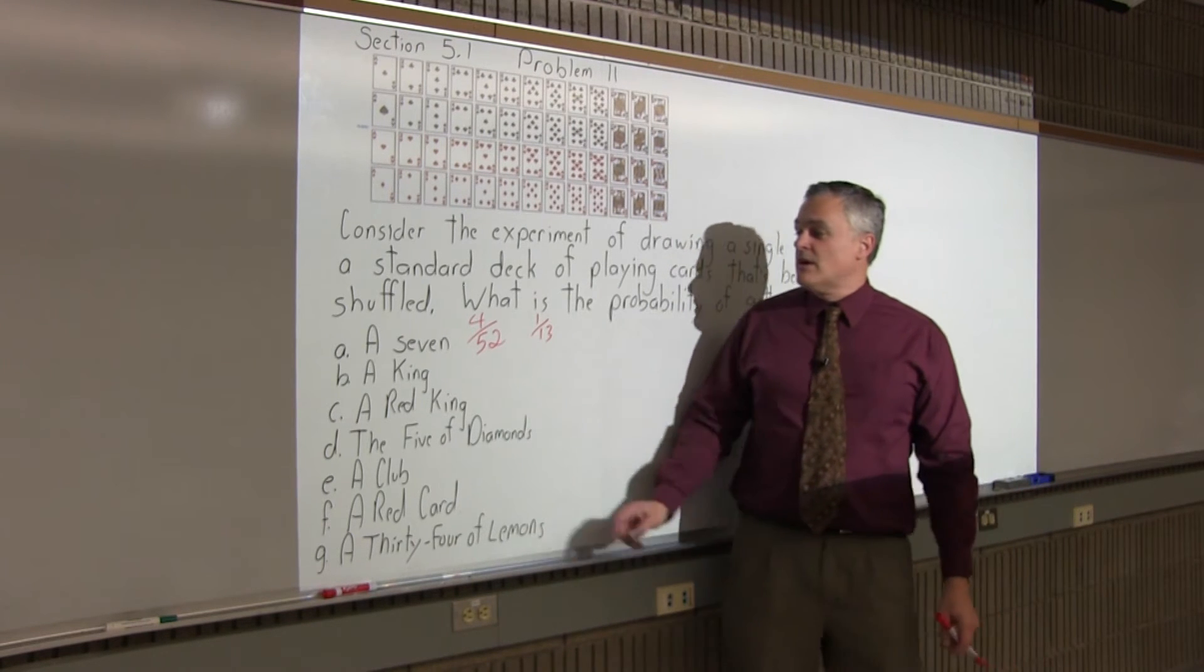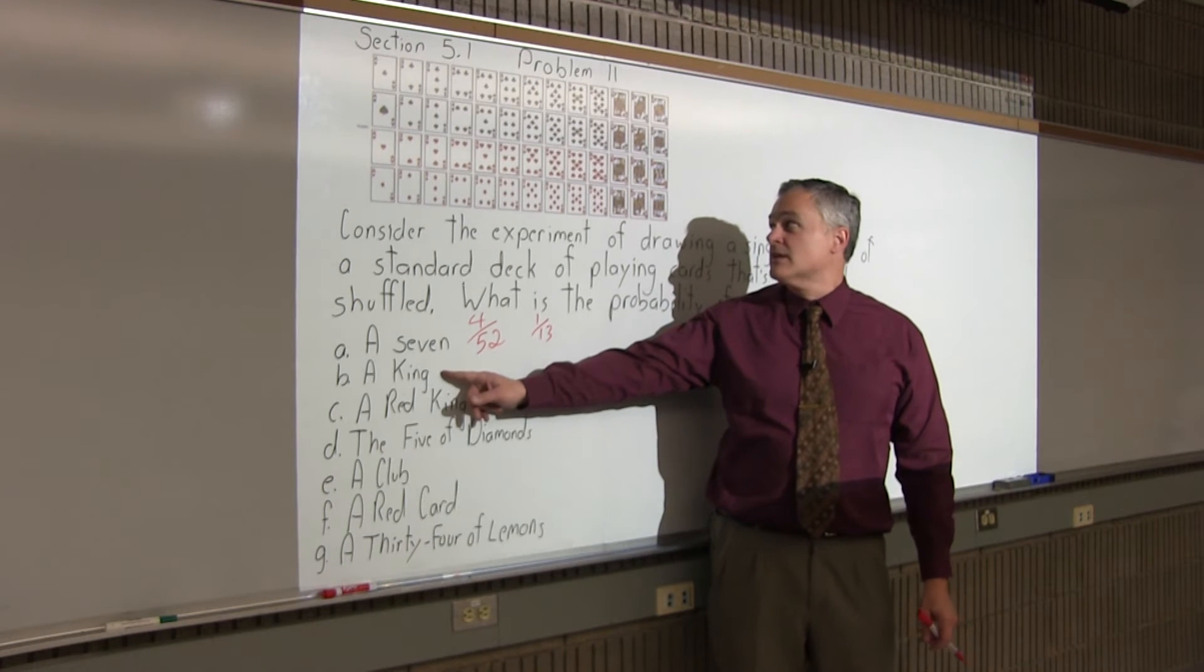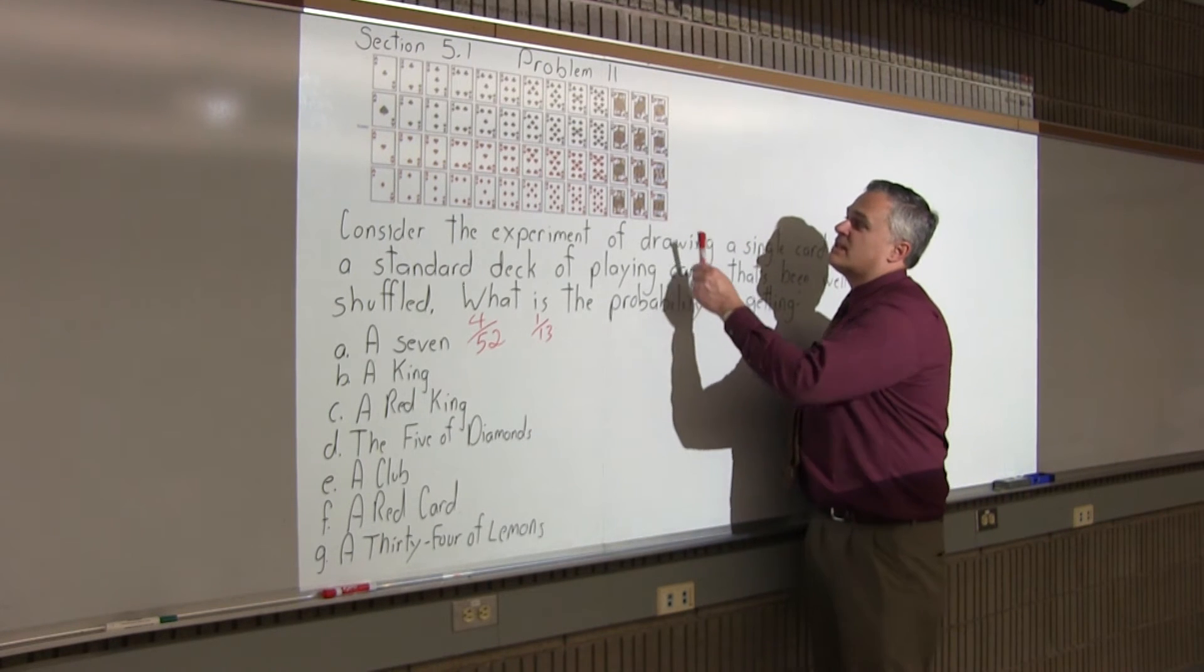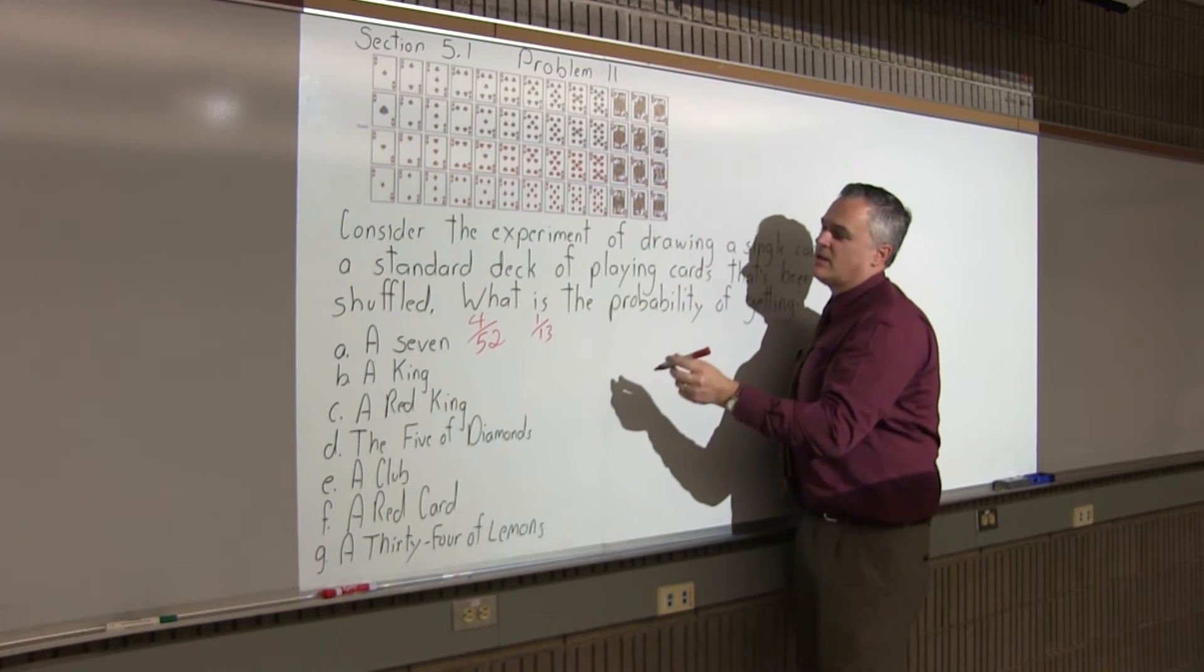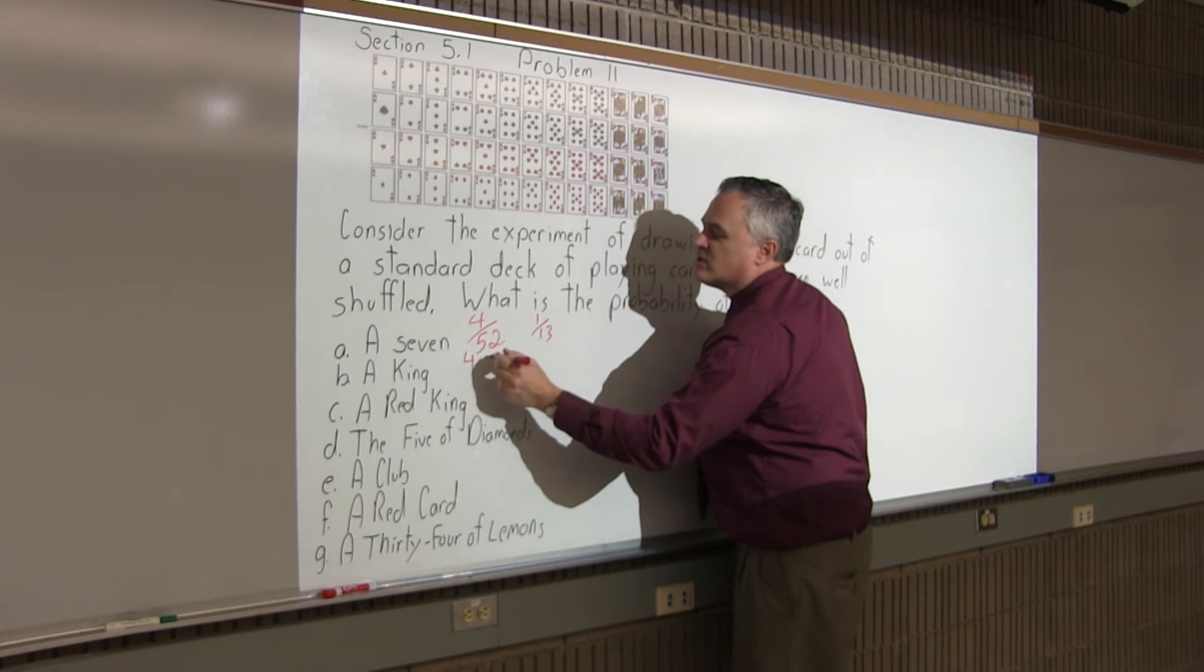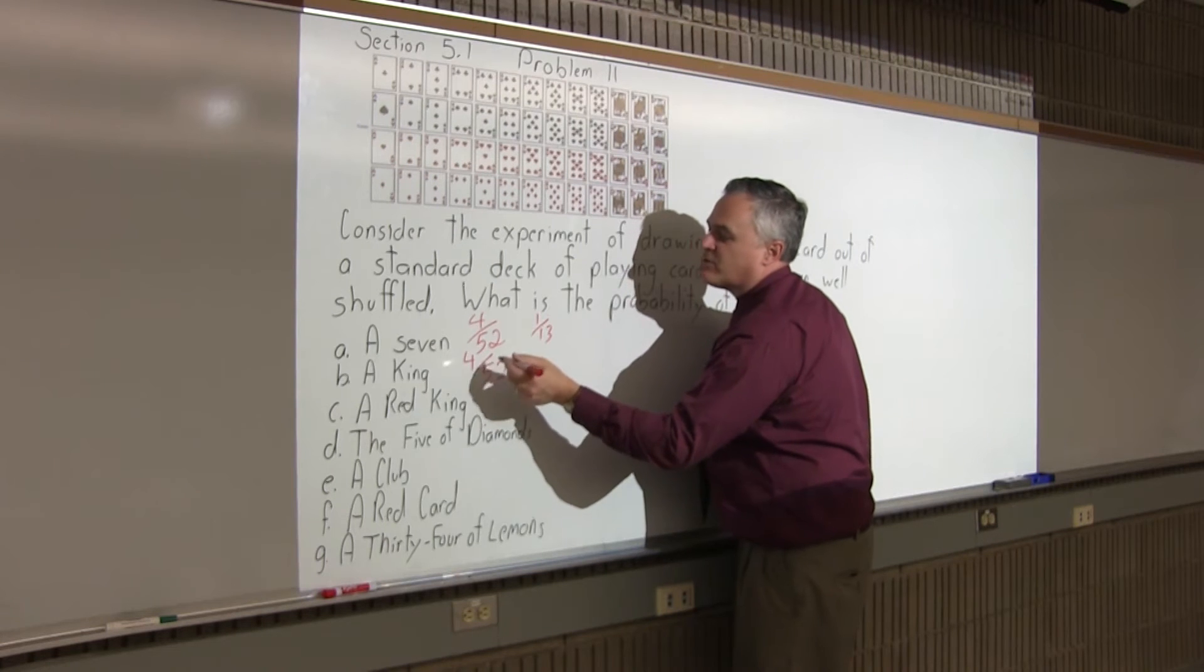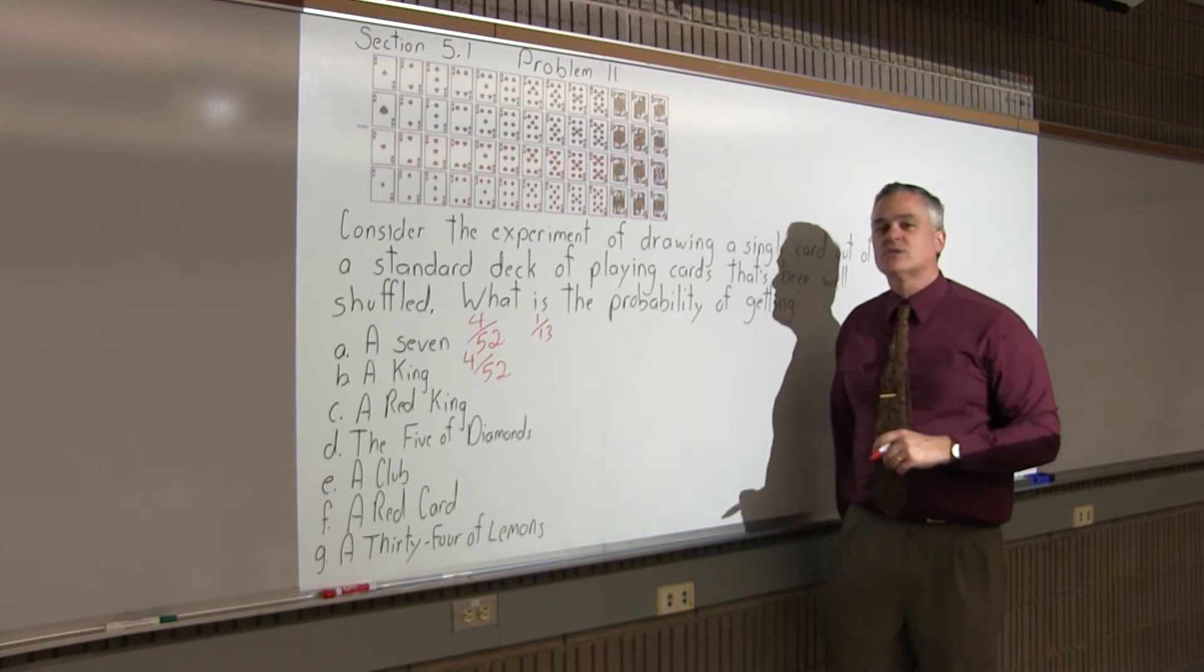What's the probability of drawing out a card that's a king? The kings are designated with a K for king, and there are four of those: king of diamonds, king of hearts, king of spades, king of clubs. So, same answer. Even though it's a different card, there's the same number of kings out of 52 altogether. It's also 4 over 52.